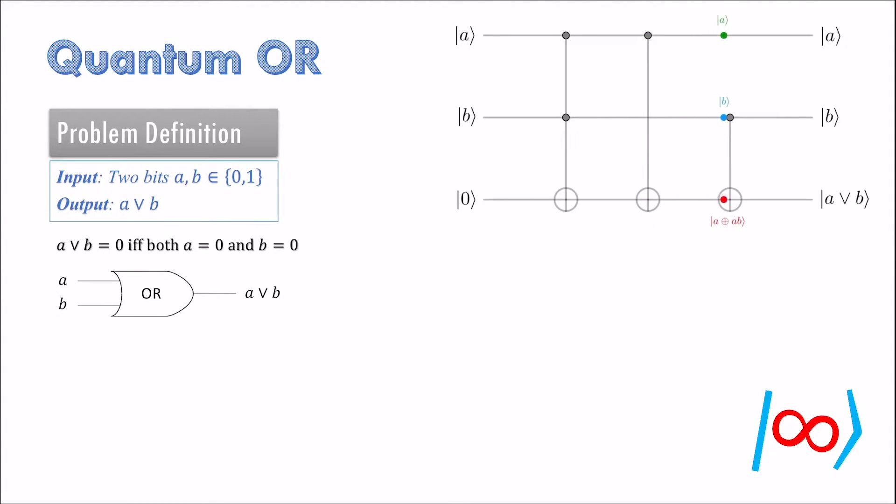Evaluating OR is straightforward on a classical computer as there is a classical gate that evaluates OR of 2 bits, but an analogous quantum OR gate does not exist.